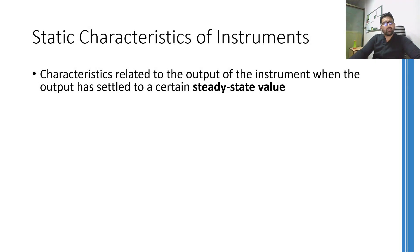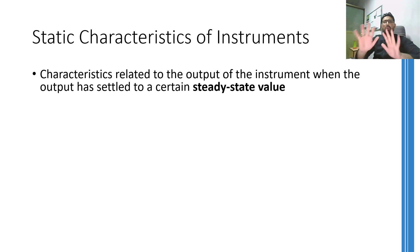Dear learners, I'm going to discuss the most important concepts related to any instrument or measuring system in this part of the lecture. Any instrument or system in the whole world has two types of characteristics, namely the static characteristics and dynamic characteristics.